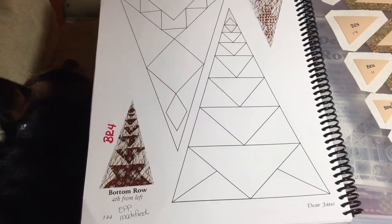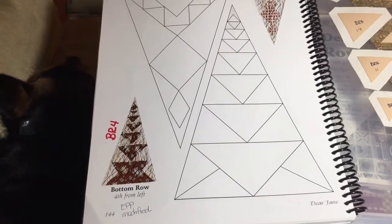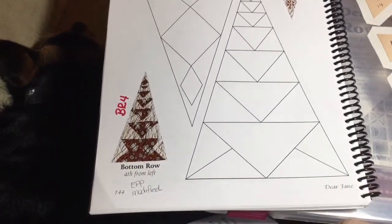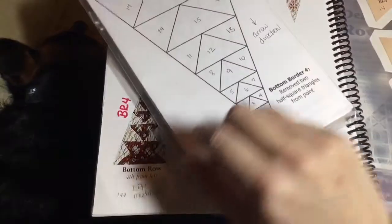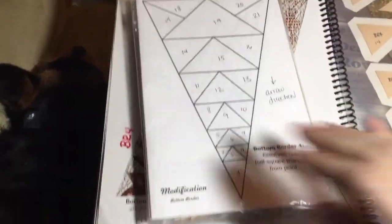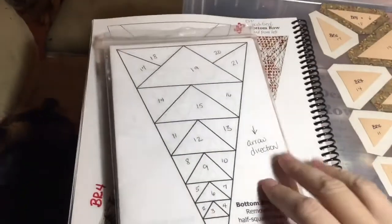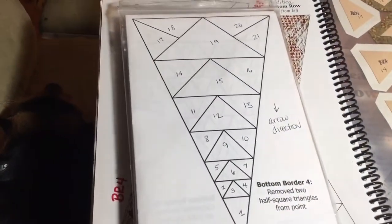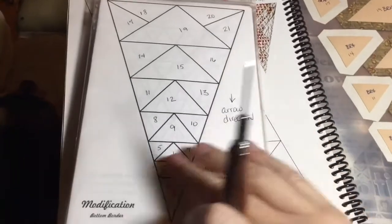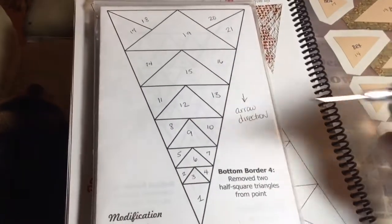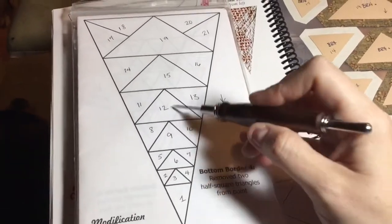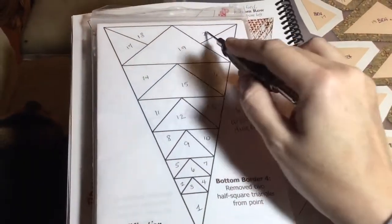The next block is the bottom row 4th block, which I call BR4, and it's another modified block. I have my booklet, and I have an arrow direction on my pieces to indicate the direction that my fabric should be going in each colored piece. The colored pieces are all these middle triangles and then these two right here.